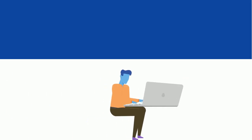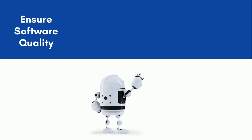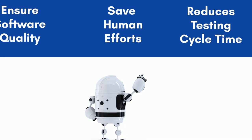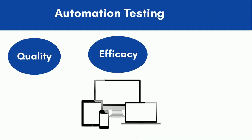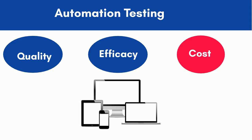Automation testing is an approach to perform the manual test steps automatically by test tools or robots. The main goals of test automation are to ensure the quality of software products through automation, save human efforts, and reduce the software development life cycle. Nowadays the IT industry demands quality and efficacy with minimum human efforts to deliver IT services. Here, automation testing is playing a big role for testing services.